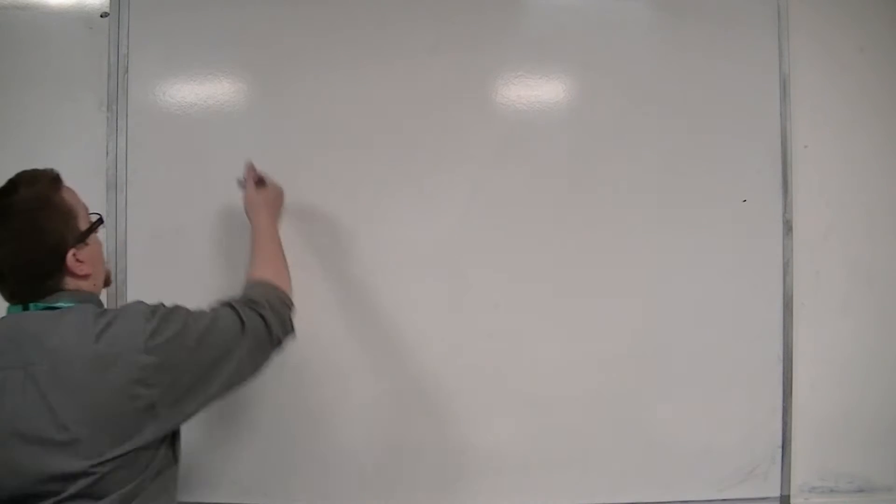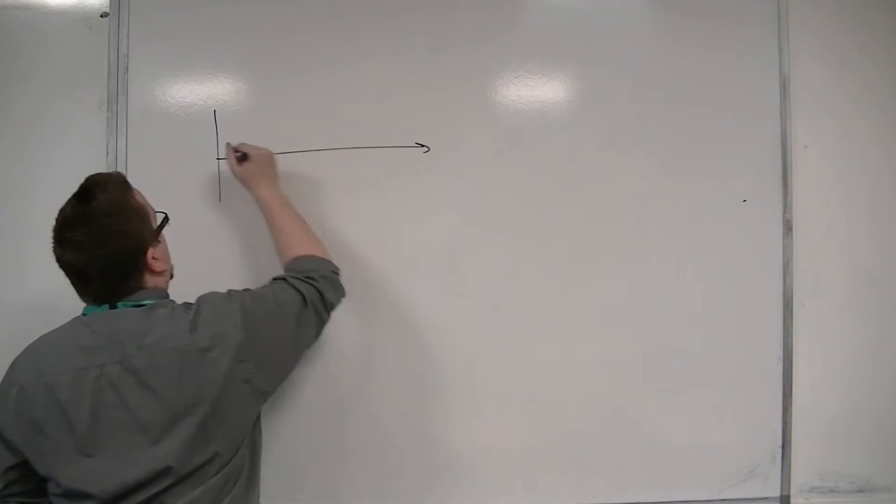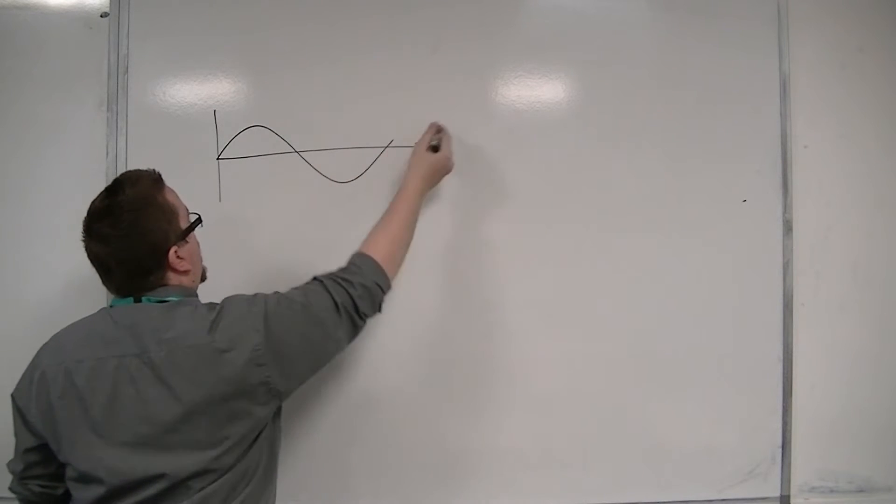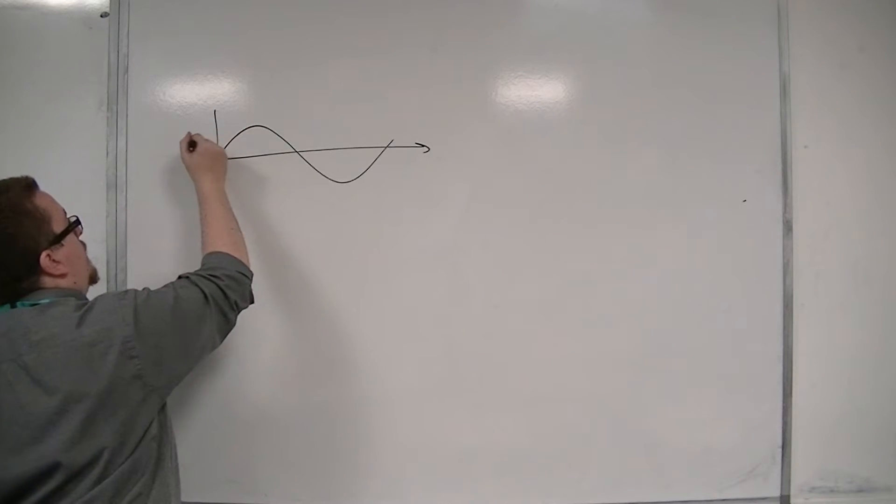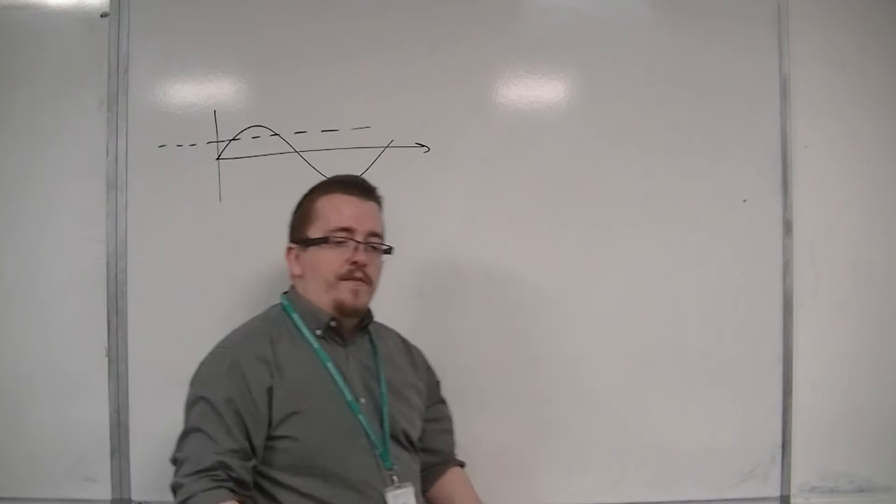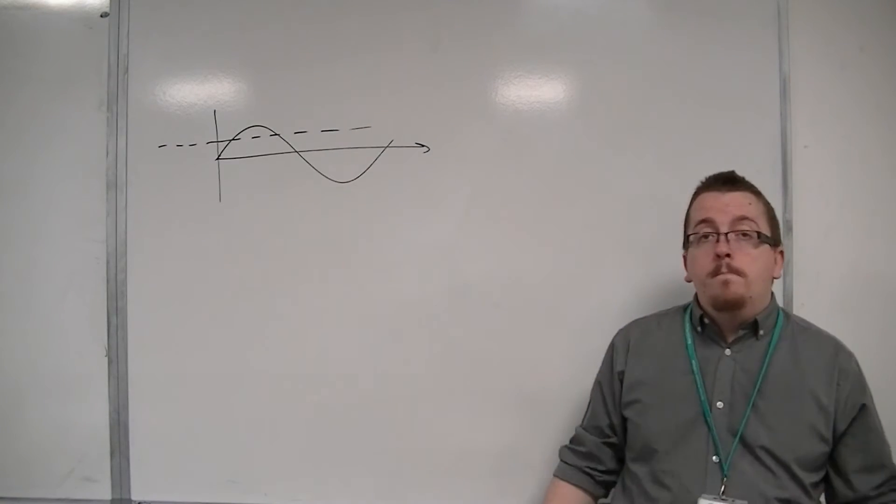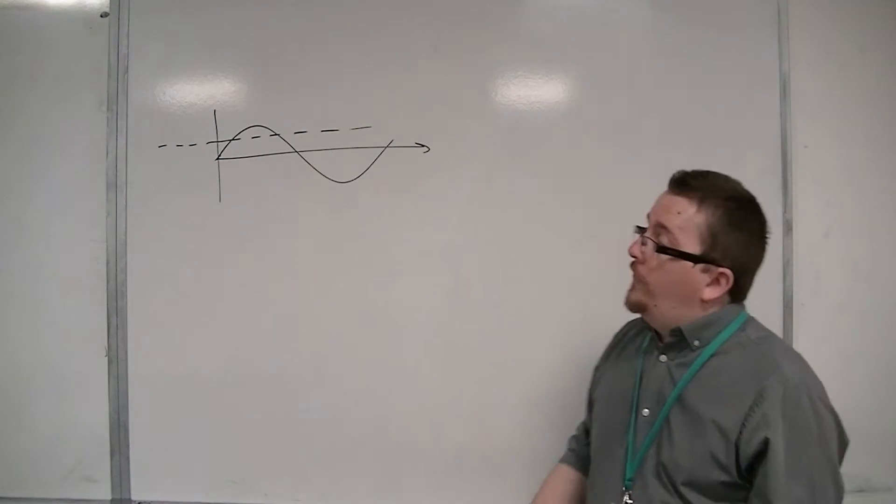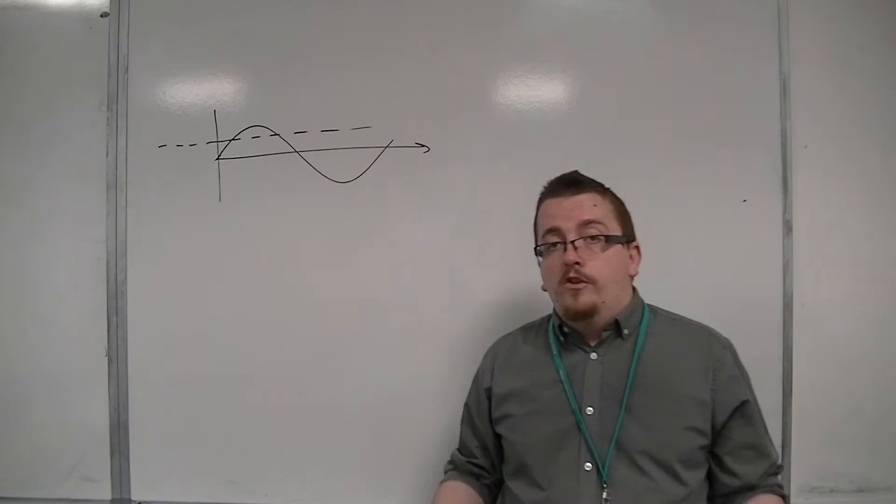So sine looks like this. And it keeps on going in either direction. And if you draw a horizontal line through sine of x, you'll find that you hit multiple values. And so sine of x is many-to-one, not one-to-one.